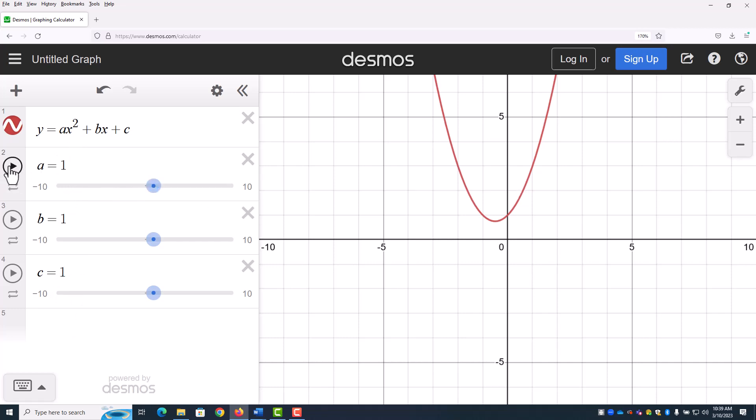Notice there's a little play button over here. Let's just hit play and see what happens as a advances. So you can see a changing as it goes from positive 10 to negative 10 and back again. So let's pause that for a second.